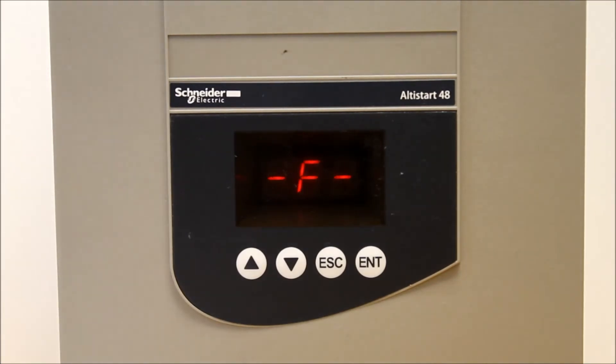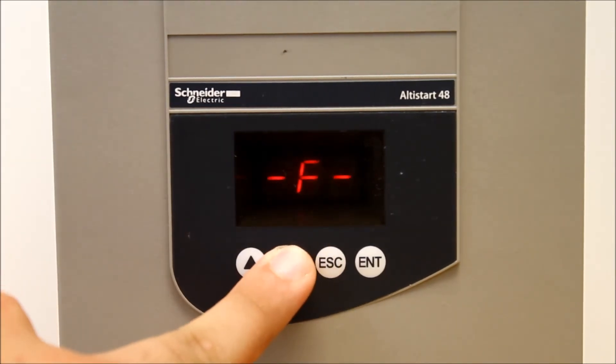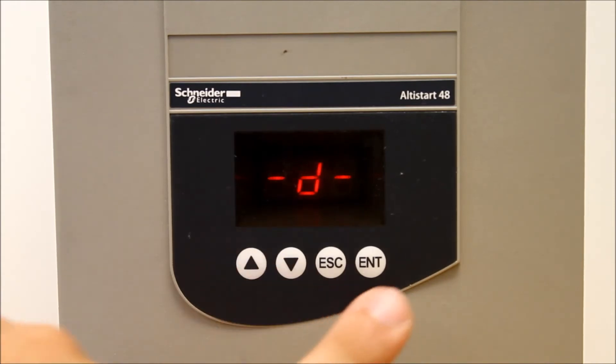If you want to change it to ramp stop, you have to make that a D, D as in David. You can hit the up arrow key to get there. When you see D, press Enter. It will blink once to confirm that it took the setting.